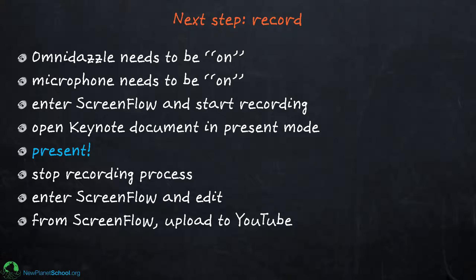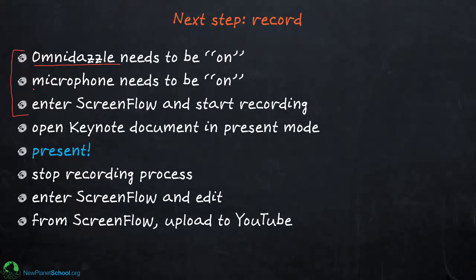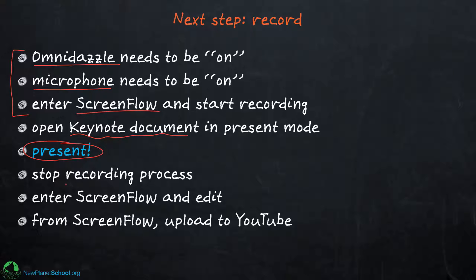Now let's go through the workflow. The main thing you need to do is make sure when you get started that three things are on at the same time: you need to be able to write on the screen, record what you're saying with a microphone, and ScreenFlow needs to be recording the screen. Once everything's going you open up your Keynote presentation and present it. When you're done you simply stop recording, which takes you into ScreenFlow. It asks if you want to save the file — if you like it, save it; if not, start over.